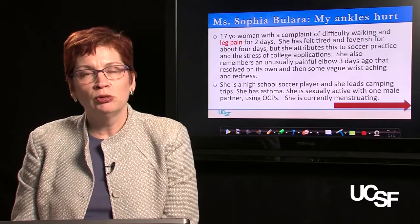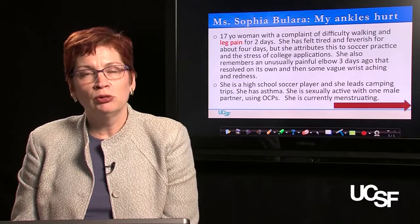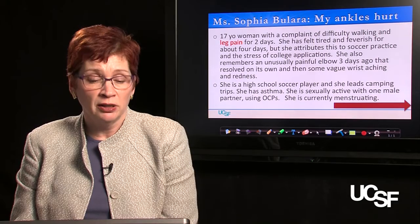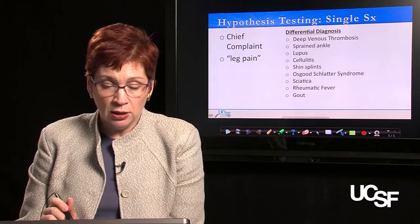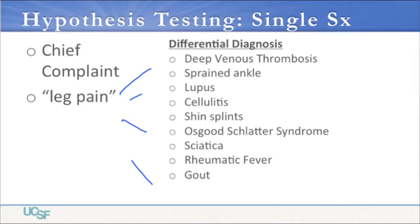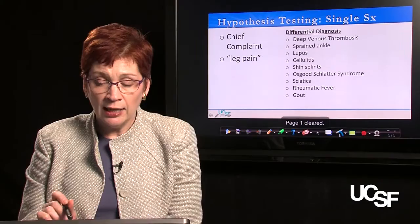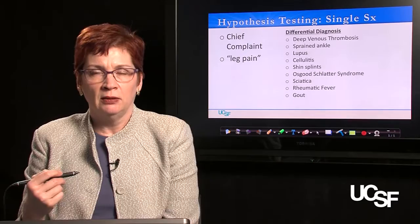Let's approach Sophia's problem using hypothesis testing as our clinical problem-solving strategy. We would focus on one symptom — leg pain — and generate a differential diagnosis list of things that could cause it. That might include deep venous thrombosis, sprained ankle, lupus, cellulitis, shin splints, Osgood-Schlatter syndrome, sciatica, rheumatic fever, or gout. The person generating this list is probably already considering elements from Sophia's history — for example, her use of oral contraceptives making DVT relevant, and her being a young woman making lupus relevant.